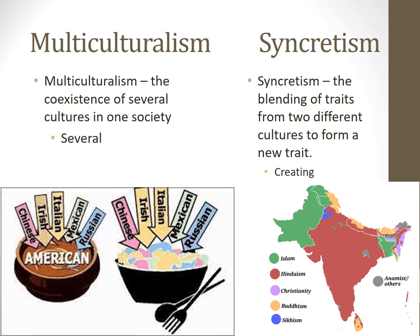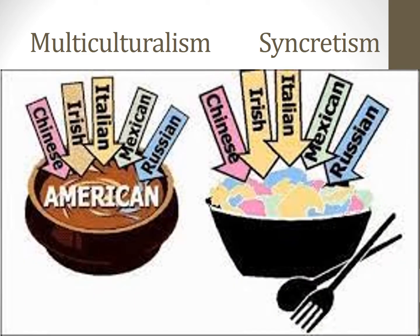Acculturation and assimilation are effects of diffusion where cultural traits are lost. Multiculturalism, on the other hand, is the coexistence of several cultures in one society. So when we see ethnic enclaves within a city, that displays multiculturalism rather than assimilation. If we can see, hear, and experience another culture in one particular area of a city, rather than that culture melting away, it suggests coexistence rather than erasure. In fact, many advocates of multiculturalism have pushed back against the metaphor of society as a melting pot and pushed forward the metaphor of a tossed salad.